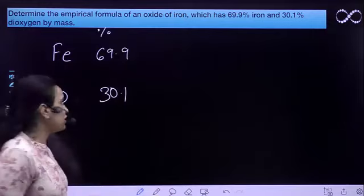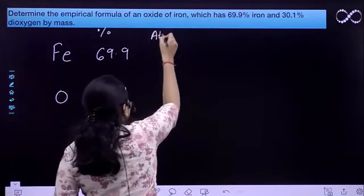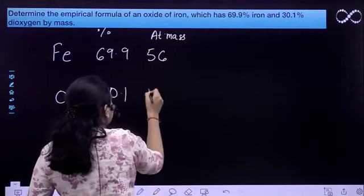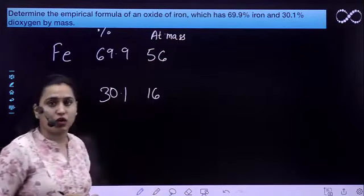Ismei agar haam mandi jai, phir atomic mass lenge. Lik dhetenha table mein. It is 56 for iron and 16 for the oxygen.